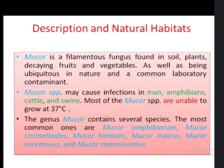Now comes the description and natural habitat of Mucor. Mucor is a filamentous fungus found in soil, plants, and decaying fruits and vegetables. It is ubiquitous in nature and a common laboratory contaminant. Mucor species may cause infection in man, amphibians, cattle, and swine. Most Mucor species are unable to grow at 37 degrees centigrade. The genus Mucor contains several species, such as Mucor amphibiorum, Mucor indicus, and so on.